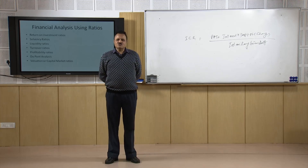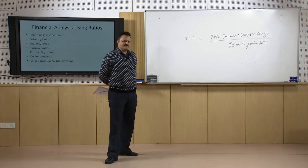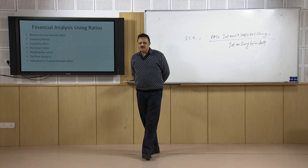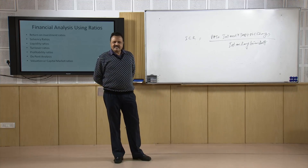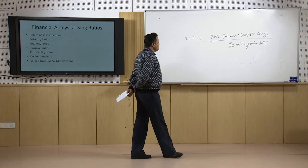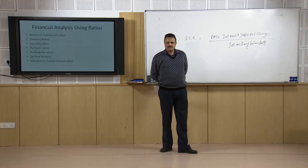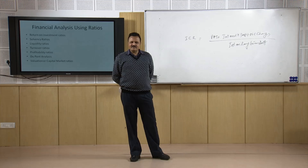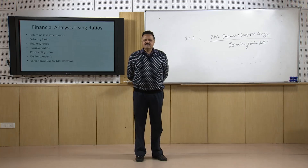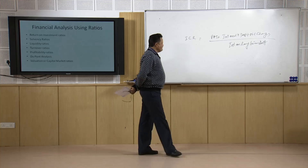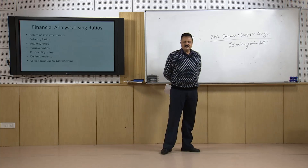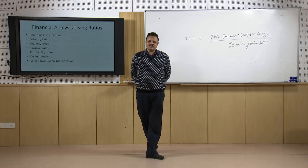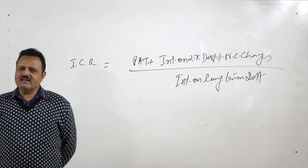This ratio tells us about the interest-paying capacity of the firm. For paying interest, which is a revenue expense, you need liquid resources. Liquidity comes primarily from cash profit, plus the interest already paid back (added back in numerator), plus non-cash charges like depreciation fund. If cash profits are insufficient, the depreciation fund can be used for a short duration until nominal profit converts to cash profit.